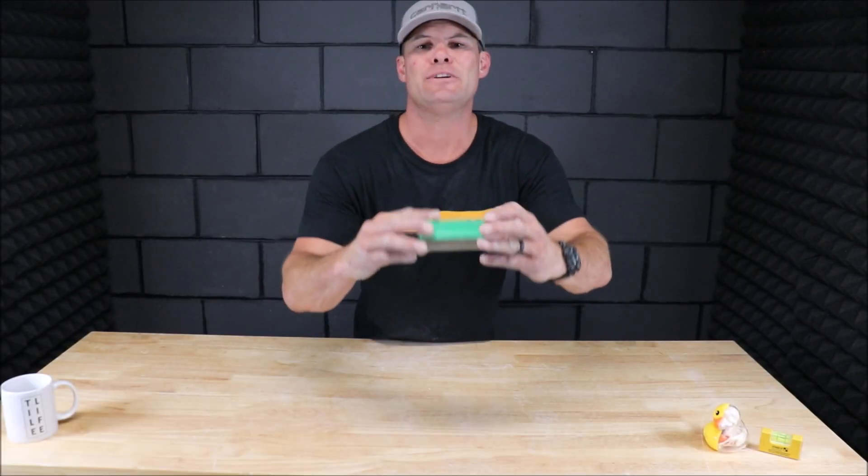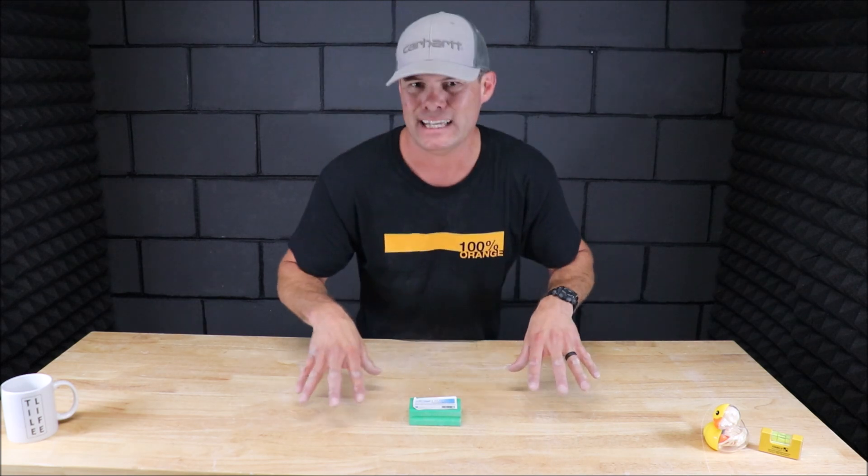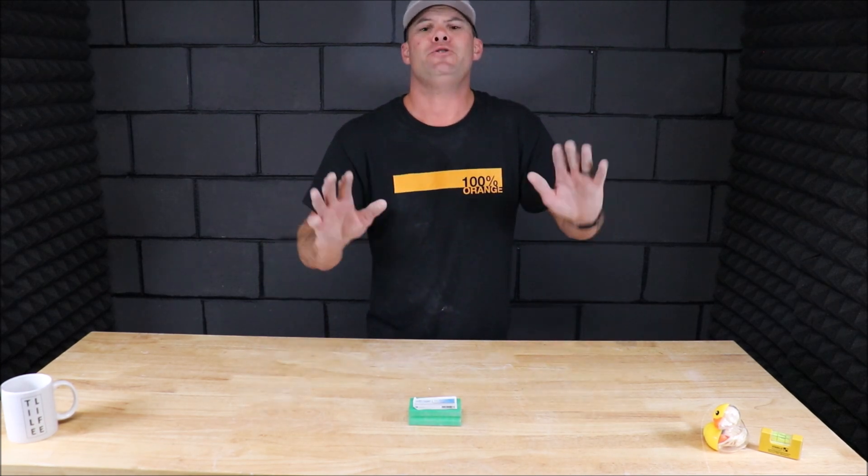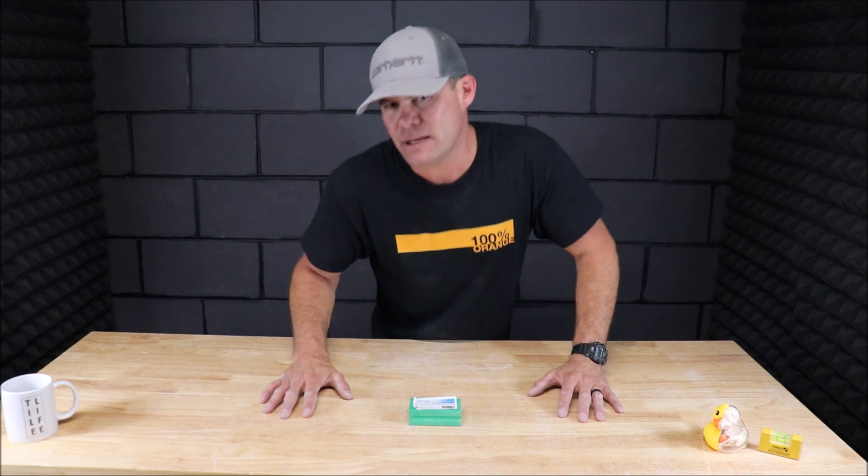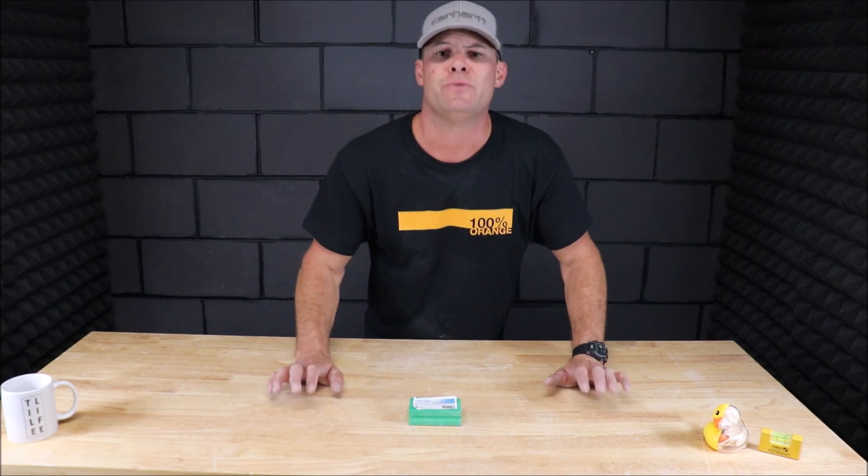Well there you have it, a 60 grit diamond hand pad for your cut edges of tile to make it look factory, beveled and smooth. I hope you guys enjoyed this quick video. If you want to help my channel please hit the thumbs up button down there and most importantly share the video if you know anybody you might find it useful and I'll see you guys on the next one.